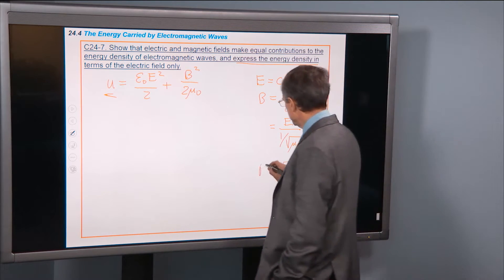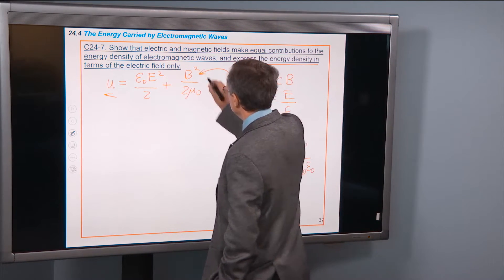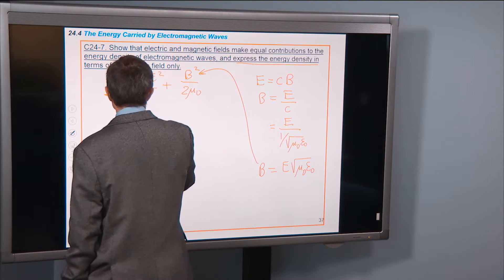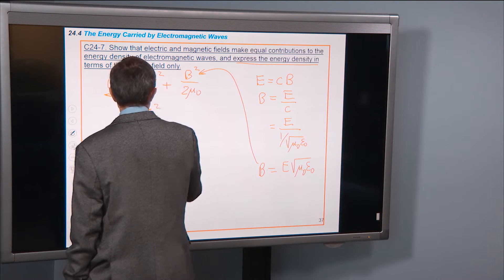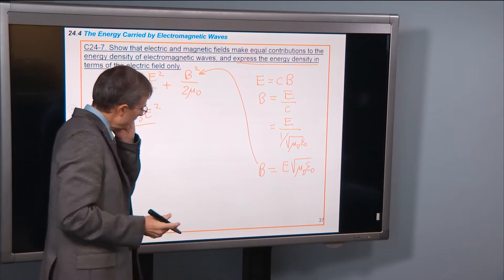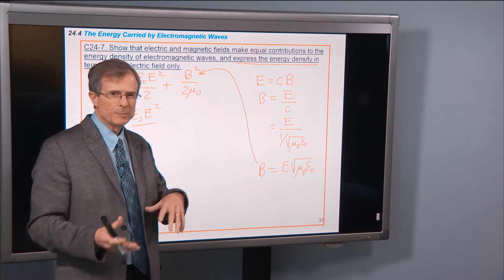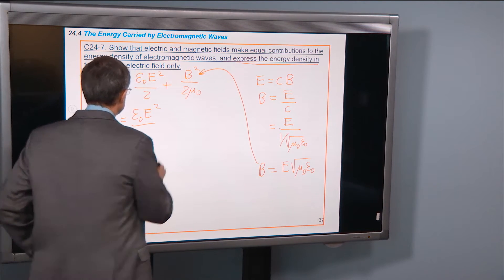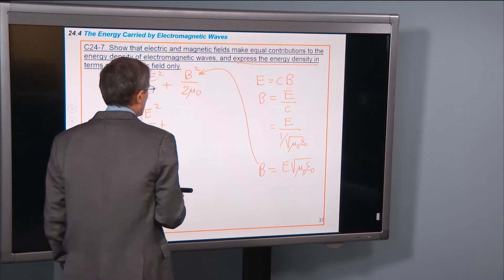And we're going to substitute that b into here and see what we got. We got ε0e². This is a great way to understand the concepts, is to be able to use them in a derivation like this. All right, b².